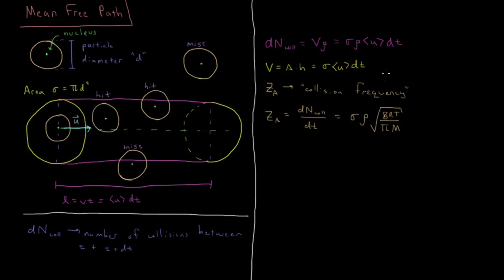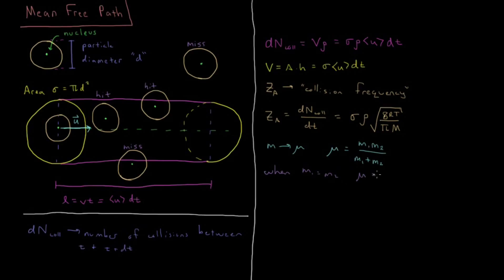What we need to do is replace any occurrence of mass, like molar mass, with the reduced mass. The reduced mass for two particles is equal to M1 times M2 over M1 plus M2 — the product divided by the sum. When you have the special case that two particles are equal in mass, so when M1 equals M2, then the reduced mass simplifies to just half of the mass: mu equals M over two.